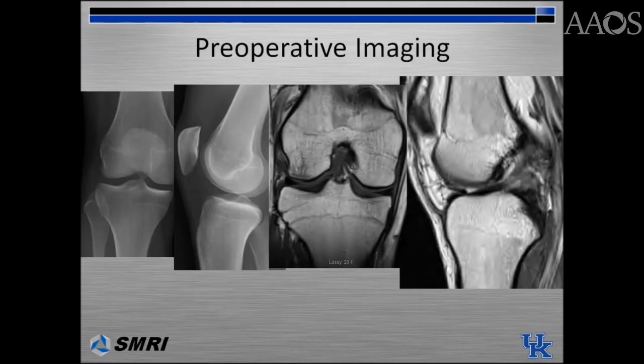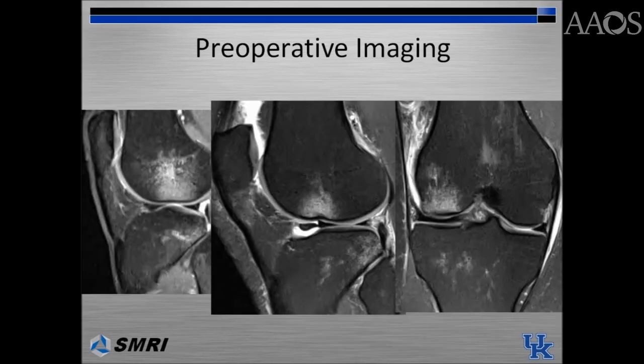Preoperative x-rays and an MRI are shown here. The anterior cruciate ligament tear can be seen clearly on the coronal and sagittal MRI images. Pathognomonic ACL tear bone bruises are seen on these MRI T2 images, in the middle one-third of the lateral femoral condyle — also known as the sulcus terminalis — and the posterolateral tibia.